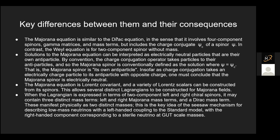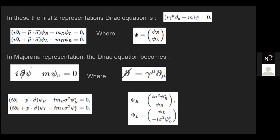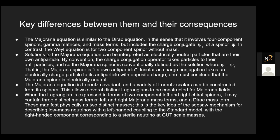The key difference: a Majorana equation is similar to the Dirac equation in involving four-component spinors, gamma matrices, and mass terms — but it includes the charge component Psi-c of a spinner Psi. Psi-c wasn't there in the Dirac equation but it's there in the Majorana equation. The Weyl equation is for two-component spinors without mass; I've only covered the Dirac equation because the whole point is mass.